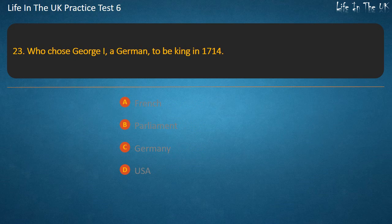Question 23. Who chose George I, a German, to be king in 1714? Options: French, Parliament, Germany, USA. Answer: Parliament.